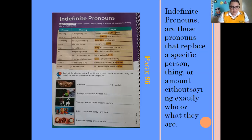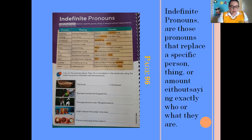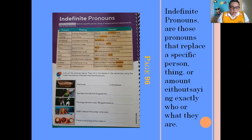They are: 'anything' — a thing of any kind; 'nothing' — not a thing; 'something' — a non-specific thing; 'some' — a little bit; 'a few'; 'many' — several things; 'all' — everything in a set; 'both' — the one and the another; 'each' — all individuals in a group; 'another' — an additional thing; and 'other' — a different one.